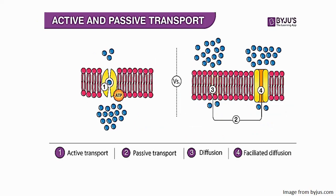Active transport goes against the concentration gradient and requires energy to occur. With active transport, molecules move from a region of low concentration to a region of high concentration using ATP. Passive transport — which includes diffusion and facilitated diffusion — sees molecules move from a region of high concentration to a region of low concentration without requiring energy.